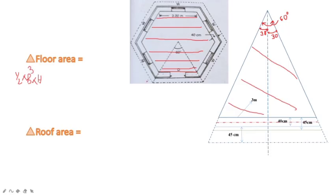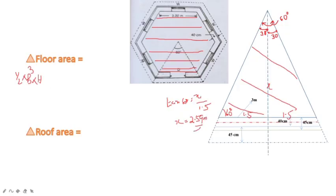The base is 3 m. We can identify the height using the angle of 60 degrees. The base splits into 1.5 and 1.5, so tan 60 is equal to x divided by 1.5. Therefore x is equal to 2.59 m. The floor area is equal to 23.38 m².